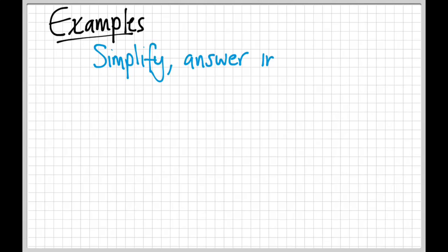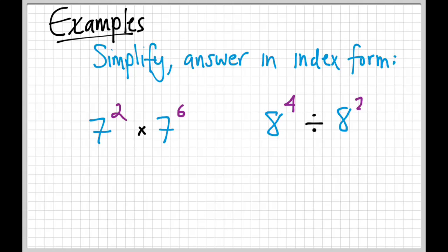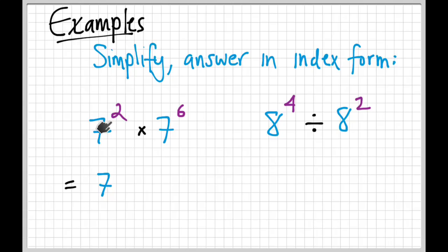Let's look at some examples — we'll simplify and put our answers in index form. The first problem is seven squared times seven to the sixth. We're going to use index law one: the base is seven, and the exponents are two and six. Two plus six is eight, so the answer is seven to the eighth.